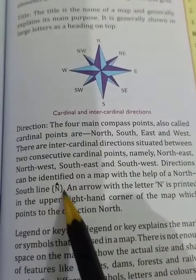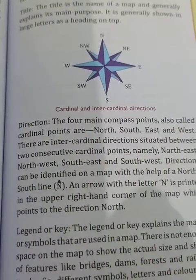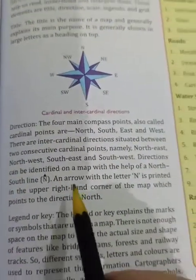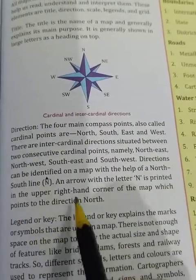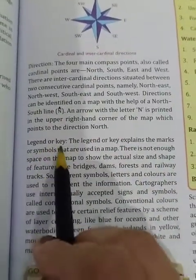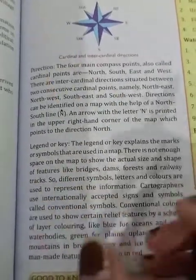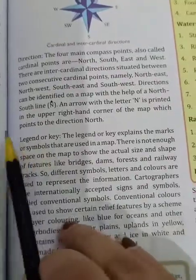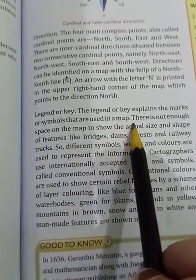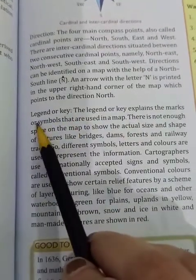An arrow with the letter N is printed in the upper right-hand corner of the map which points to the direction north. The legend or key explains the marks and symbols that are used in the map — we use symbols, letters, and marks which we call keys or legends.